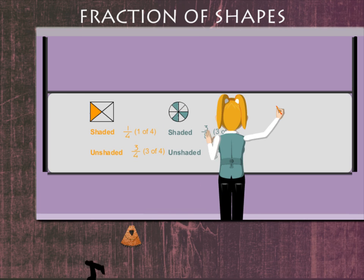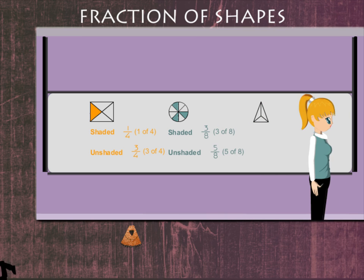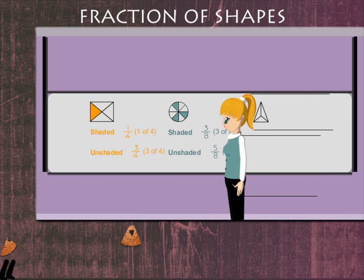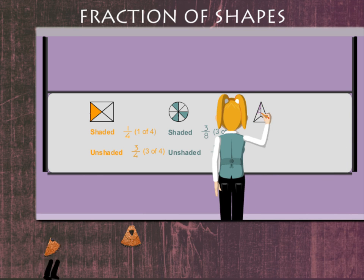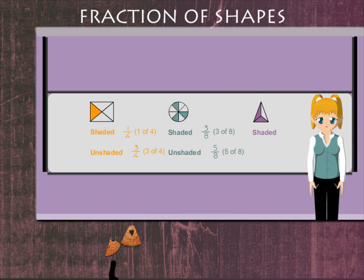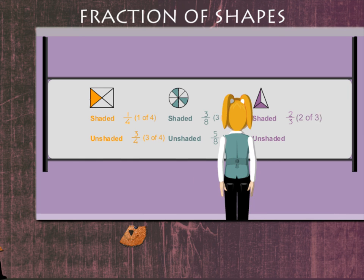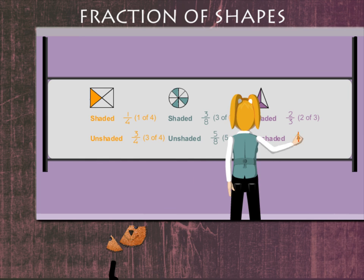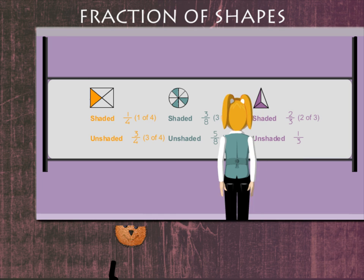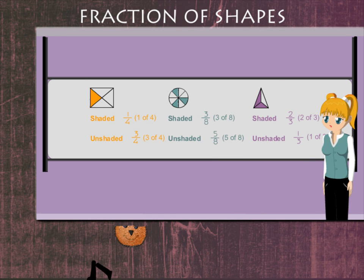Now she draws a divided triangle and shades two parts. The shaded part is two-third and the unshaded is one-third.